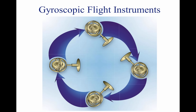Several flight instruments utilize the properties of a gyroscope for their operation. The most common instruments containing gyroscopes are the turn coordinator, heading indicator, and the attitude indicator. To understand how these instruments operate requires knowledge of the instrument power systems, gyroscopic principles, and the operating principles of each instrument. Two important design characteristics of an instrument gyro are great weight for its size (high density) and rotation at high speed with low friction bearings. There are two general types of mountings; the type used depends on which property of the gyro is utilized.